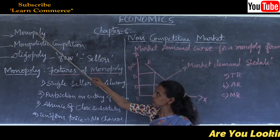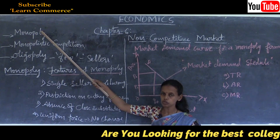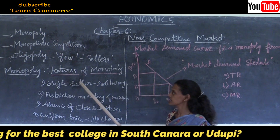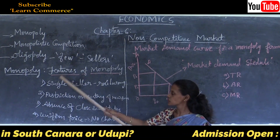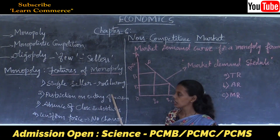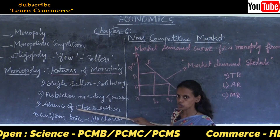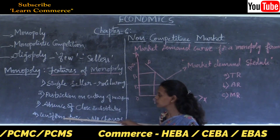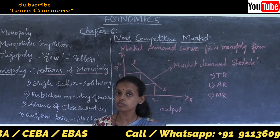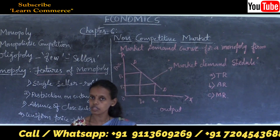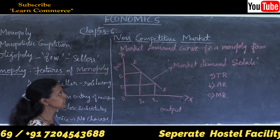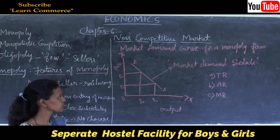Now to recap monopoly: mono means single, poly means seller. A single seller deals with a large number of buyers. Features of monopoly are: single seller, restriction on entry of new firms, absence of close substitute - no close substitute for the commodity, and uniform price - price fixed by the monopolist. The monopoly firm is a price maker and all other consumers are price takers. These are the concepts covered under non-competitive markets.